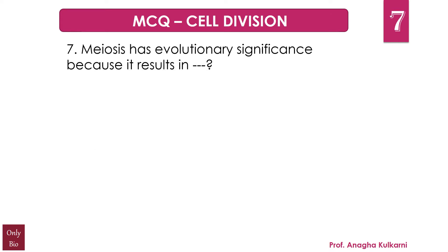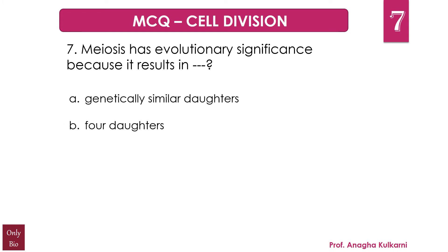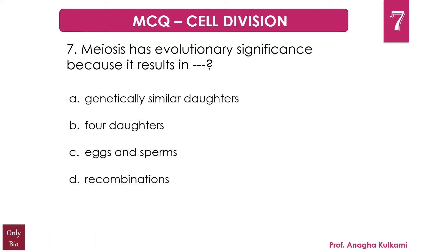The next question is: meiosis has evolutionary significance because it results in — A) genetically similar daughters, B) four daughters, C) exan sperms, D) recombinations. The correct answer for this question is D) recombinations.